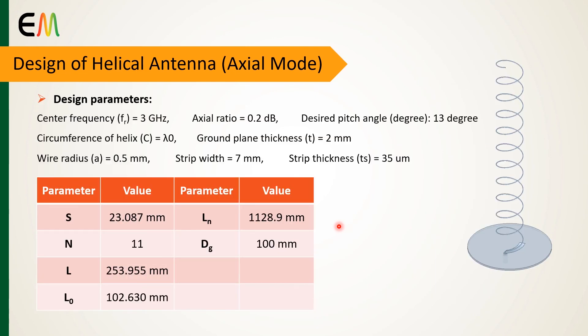Here you can find the design parameters of a helical antenna with a center frequency of 3 GHz, which are calculated using the presented formulation with these assumptions.